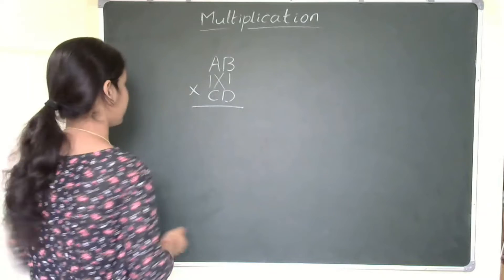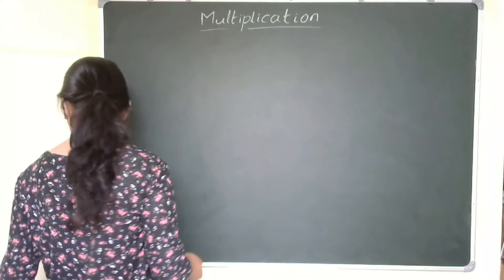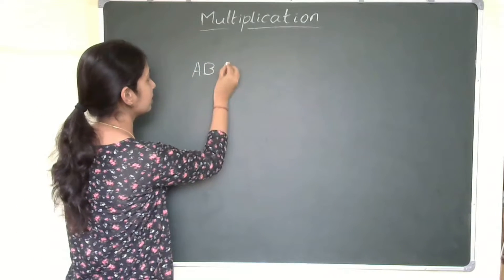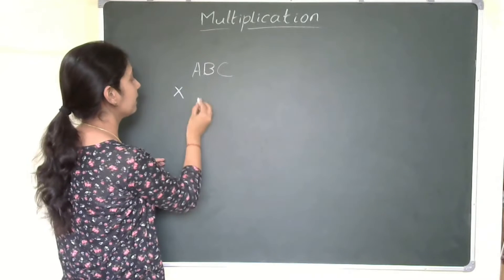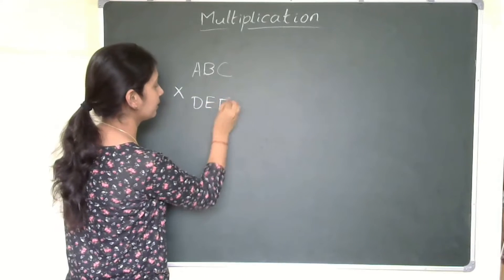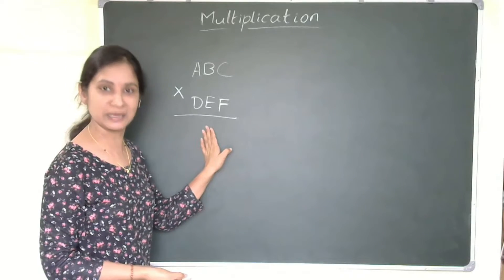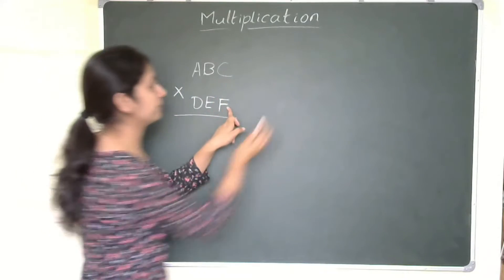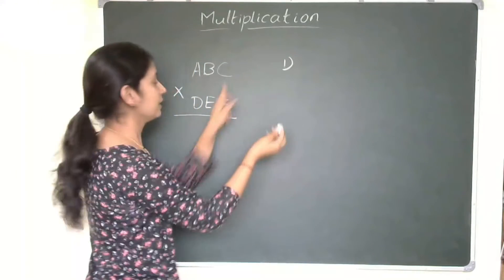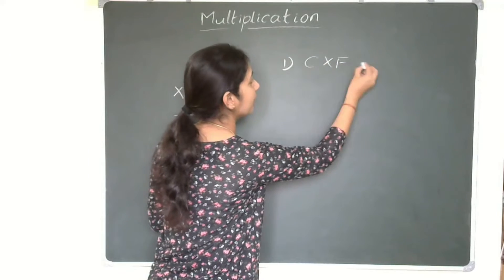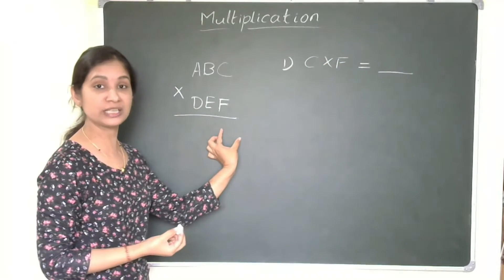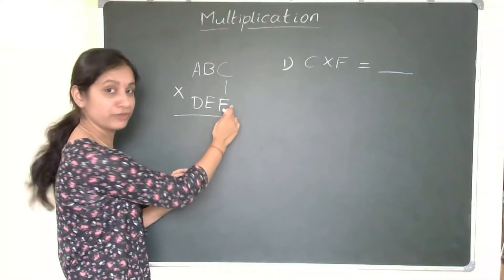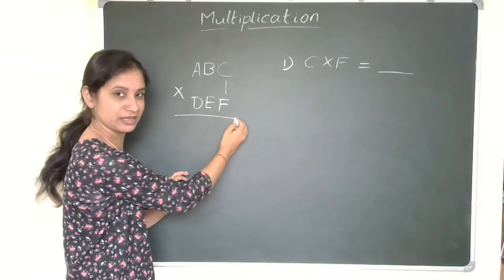So for three-digit number, the same thing. In general, we will discuss first ABC, I will take any three-digit number multiplied by DEF. This is the general form to discuss the steps. The first step, you will start with right hand side itself. CF. I will write steps here. C multiplied by F. You will write the answer as unit place. You have started from the right side. CF you are doing, you will write the answer here.